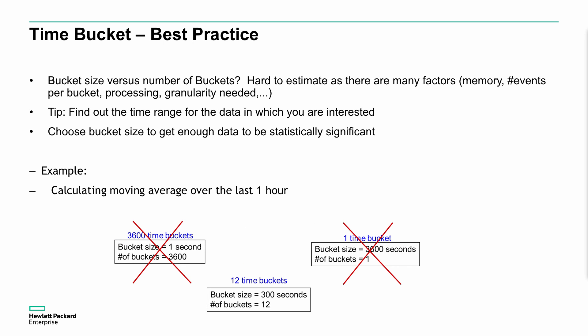Just a note on the best practice around this. What's best for bucket size and number of buckets? It's hard to estimate. Just figure out the time range you're trying to do and what you're interested in, and then choose the bucket size to get enough data to make it significant. You don't want a bucket size of a second. And equally, you don't want a bucket size of 3,600 seconds and only have one bucket. You want to make this a combination of both. So a reasonable-sized bucket, maybe a minute, two minutes, five minutes is suitable, and then have multiple buckets to do those calculations over. We don't want to do calculations every second. We want to do calculations every 30 seconds or every minute and then have a much longer time period accordingly.